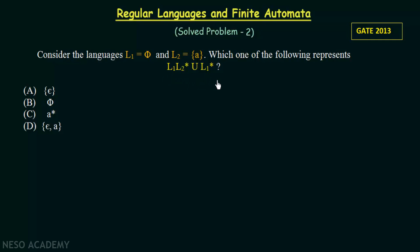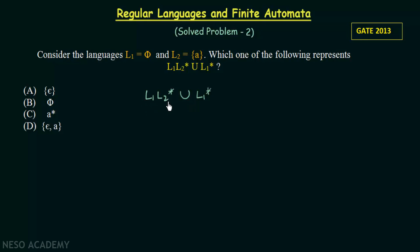We want to know what the outcome will be — option A, B, C, or D. To solve this, we need to recall the identities from regular expressions. Let us write down the expression: L1 L2 star union L1 star, and solve the first part before the second part.